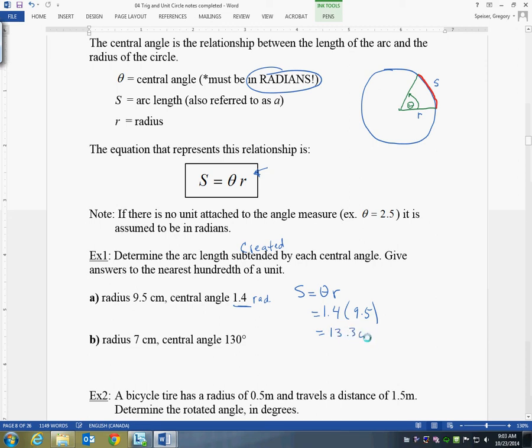1.4 multiplied by 9.5 is 13.3. Be sure to put units, right? So this is going to be in centimeters. Bingo, done.